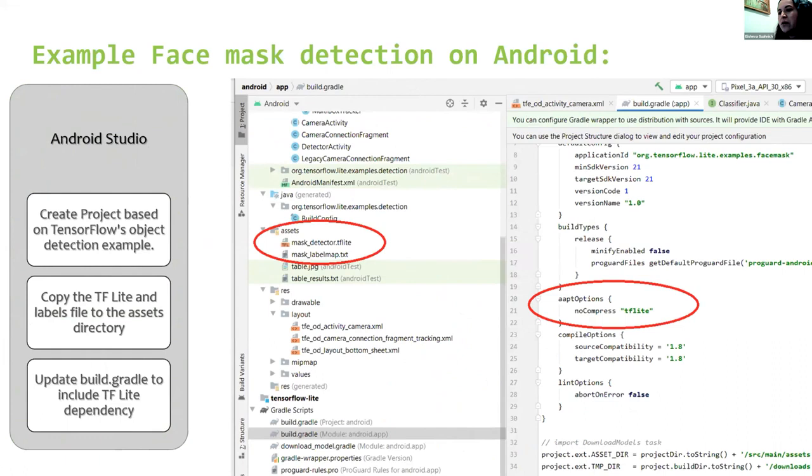Now we start to implement the TensorFlow Lite model on Android Studio. We create a project in Android Studio based on an object detector example. We move the TensorFlow Lite model and the labels to the assets directory. Update the build-gradle to include TensorFlow Lite dependencies.